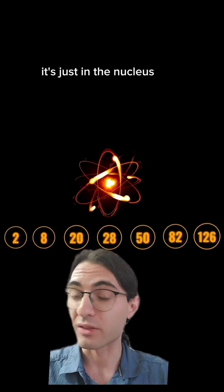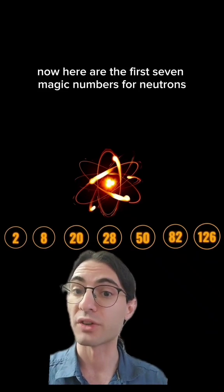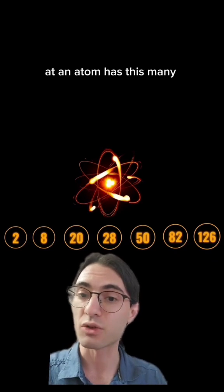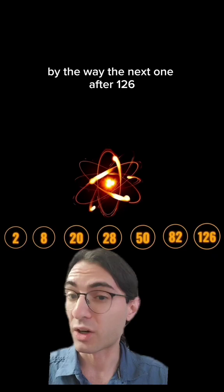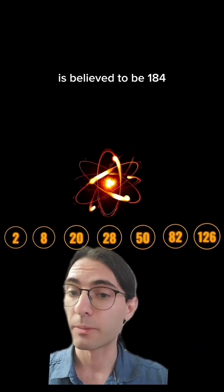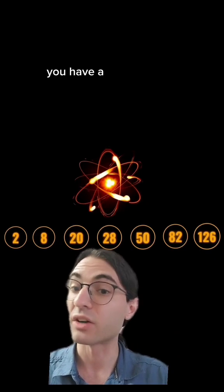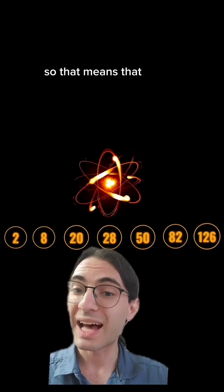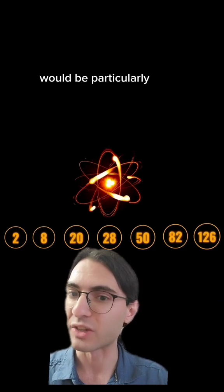They also have energy shells. It's just in the nucleus, they're shells of protons and shells of neutrons. Now here are the first seven magic numbers for neutrons, meaning that if an atom has this many neutrons, then it will be more stable than its neighbors. By the way, the next one after 126 is believed to be 184. Protons have nearly the same magic numbers except the last one. Instead of 126, you have 114. So that means that atoms with 114 protons and 184 neutrons would be particularly stable.